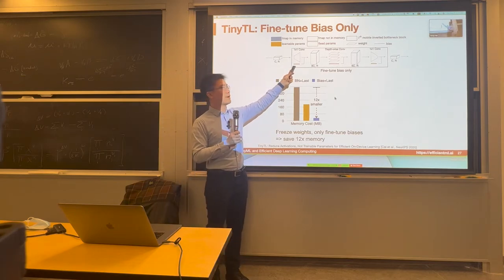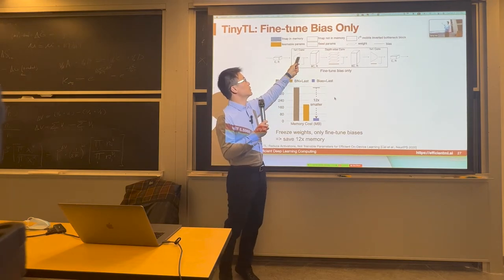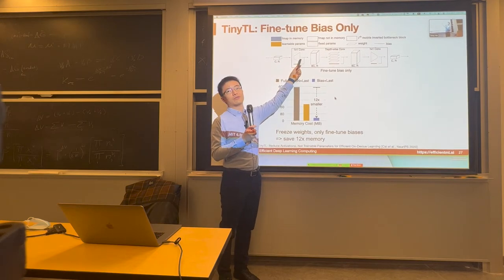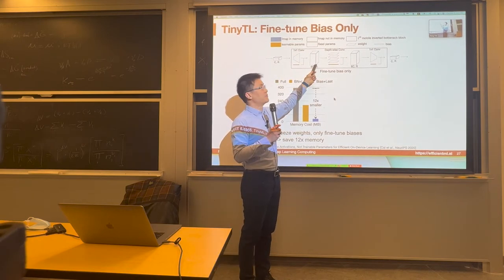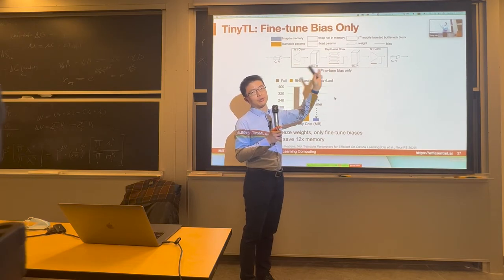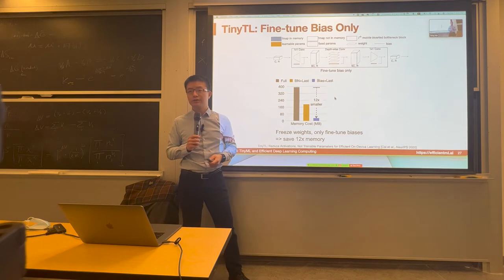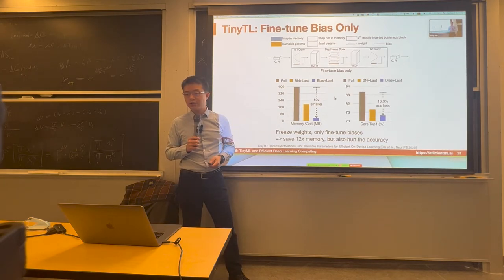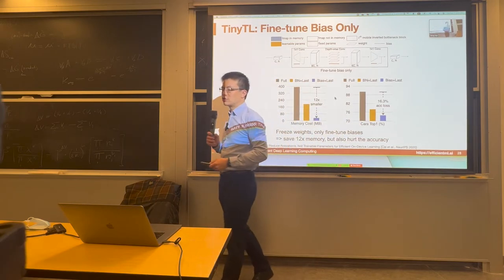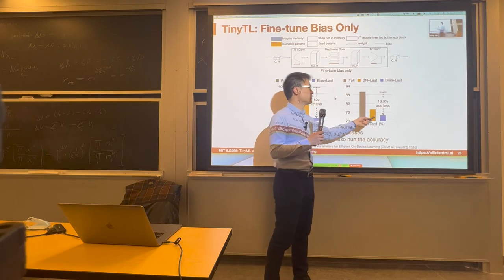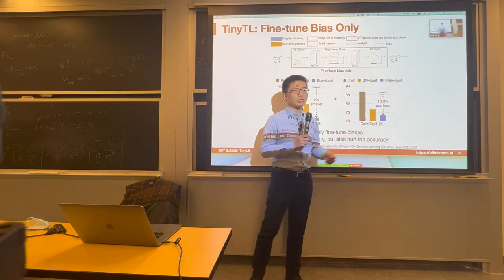This is the method of fine-tuning the bias only — we only calculate the gradient with respect to the bias and don't have to change all the parameters. That's why parameters appear empty in the figure. Nor do we need to store those feature maps in memory, since calculating the bias gradient doesn't require storing any intermediate activation. We can see a drastic decrease in training memory. But you may guess how it hurts accuracy — there is indeed a significant drop, 16.3% loss of accuracy on this dataset. It's better than fine-tuning the last layer, but still worse than fine-tuning batch normalization plus the last layer.